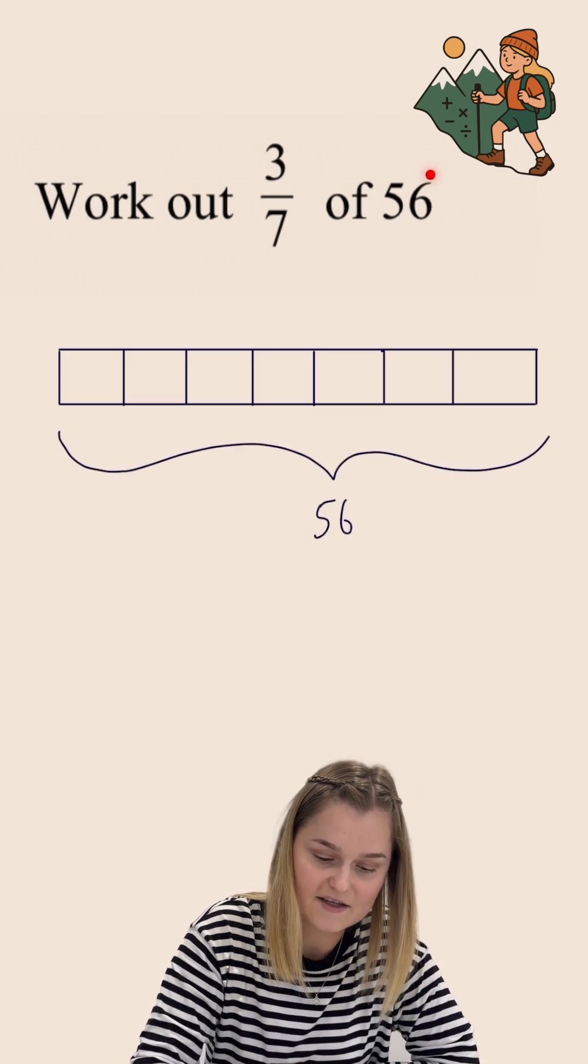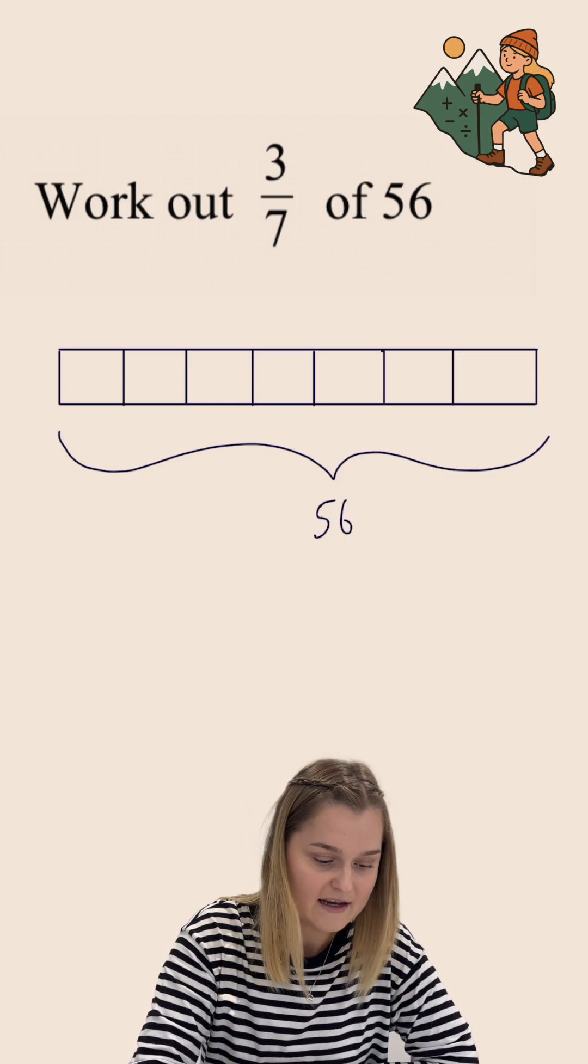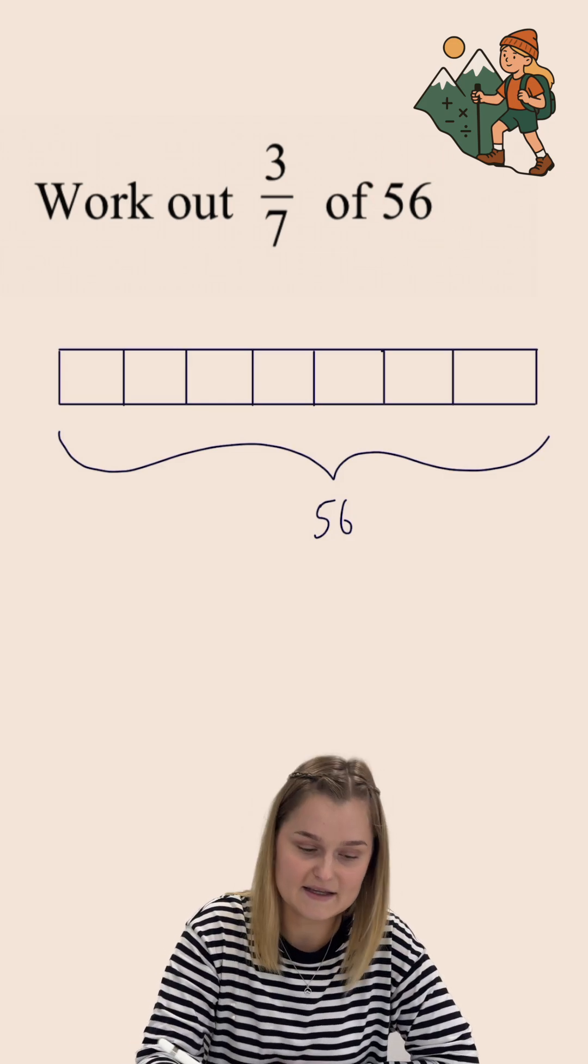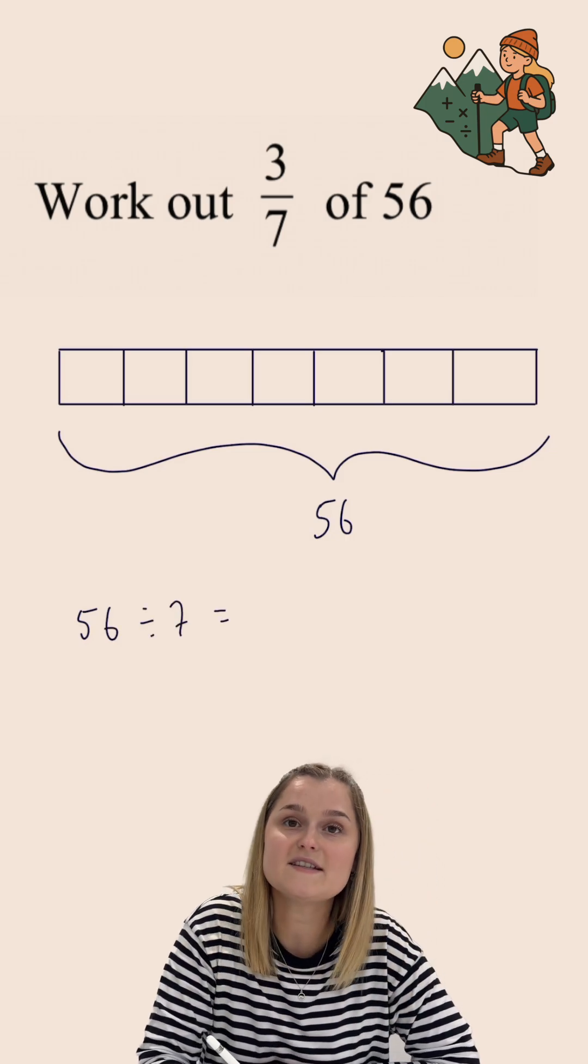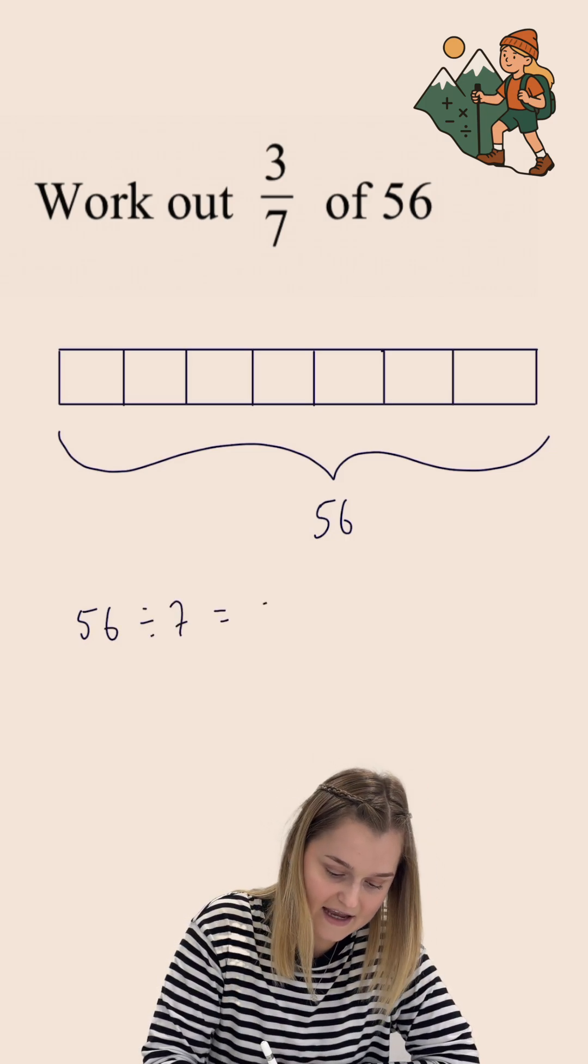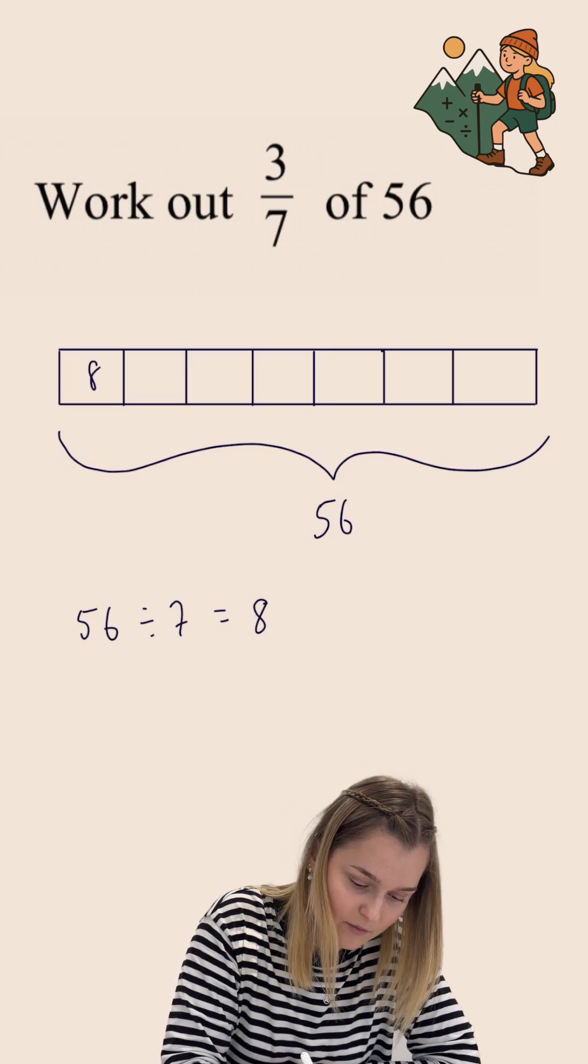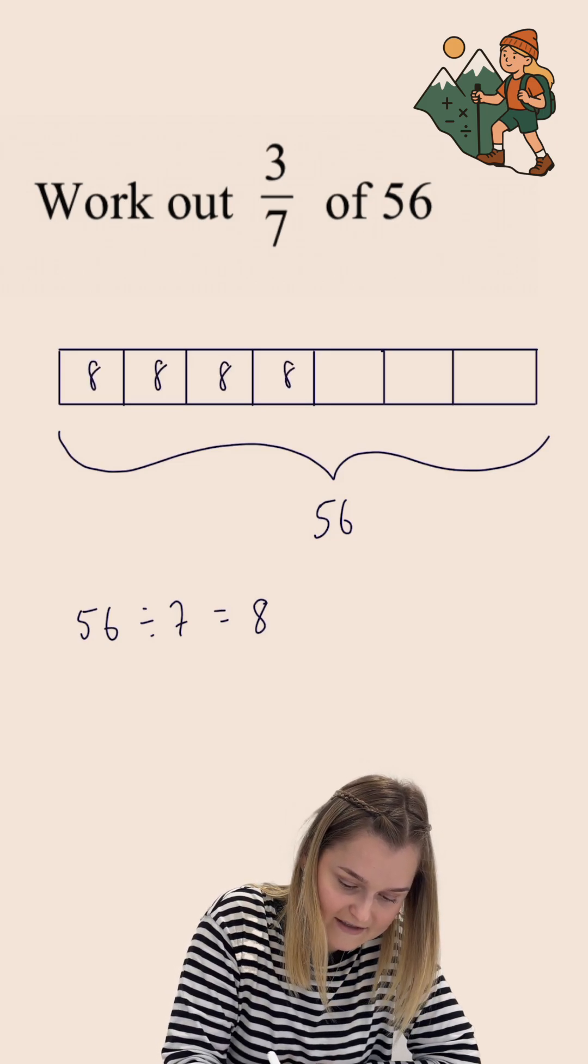And that's because that's the number that we started with. Now I want to know what just one of these pieces is worth. So I'm going to do 56 divided by seven. 56 divided by seven gives us eight. And so we know that every single part of our bar model here is equal to eight.